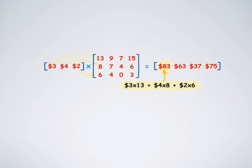Like that, we will get 3 times 9 plus 4 times 7 plus 2 times 4 which equals $63. Similarly, 3 times 7 plus 4 times 4 is $37. Similarly, 3 times 15 plus 4 times 6 plus 2 times 3 equals $75.